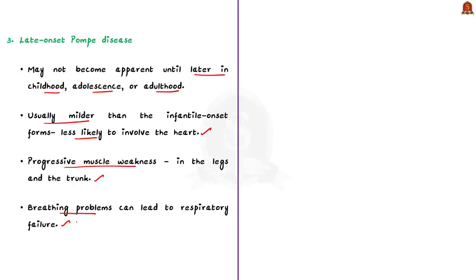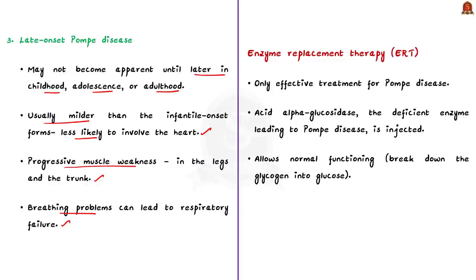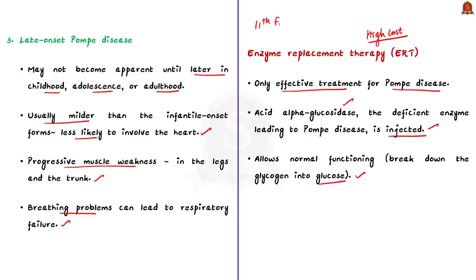The enzyme replacement therapy or ERT is the only effective treatment for Pompe disease. In this therapy, the acid alpha-glucosidase — the enzyme deficient in Pompe disease — is given via injection, allowing the patient to break down the glycogen stored in tissues into more usable glucose. However, ERT treatment is available only for some and the cost is very high. To know more about LSDs, rare diseases, and the national policy for rare diseases 2020, refer to the 11th February 2020 news analysis.